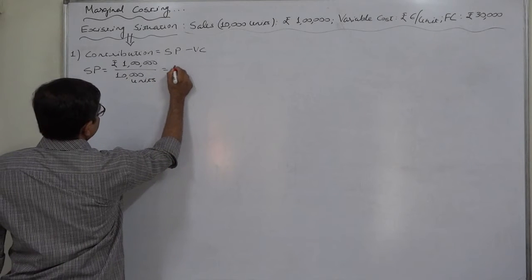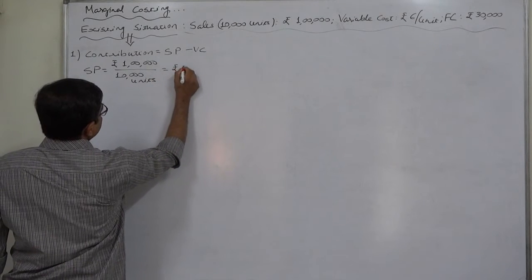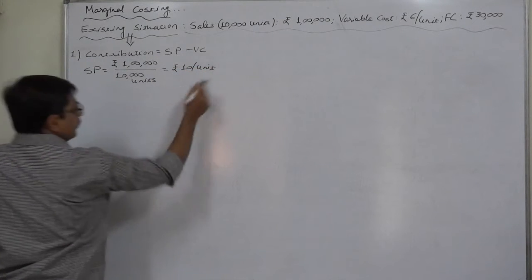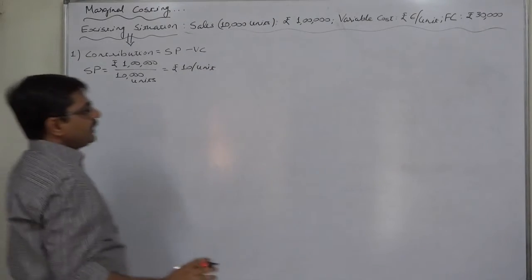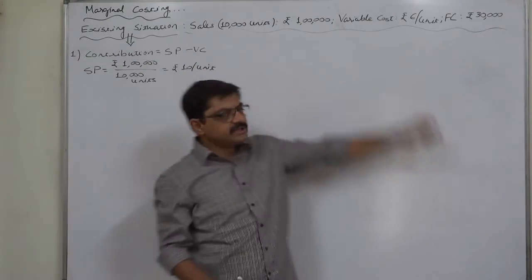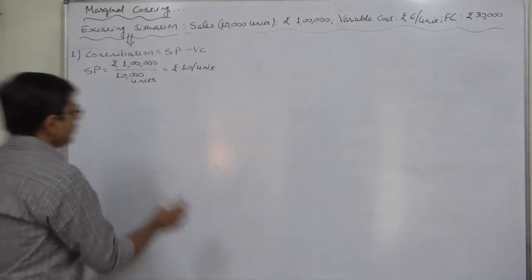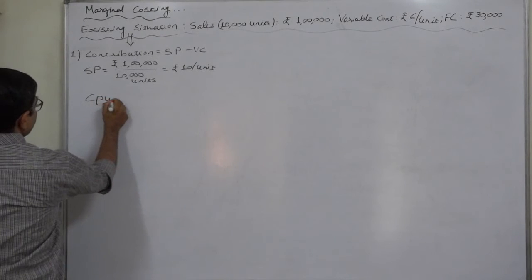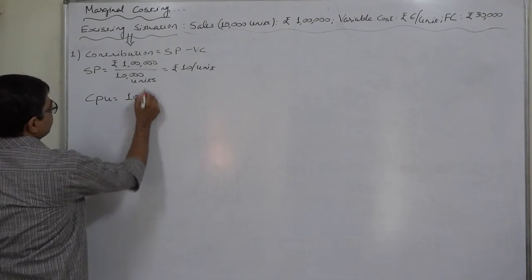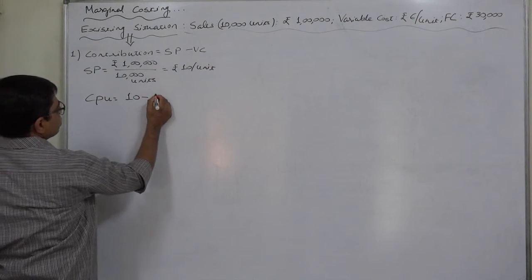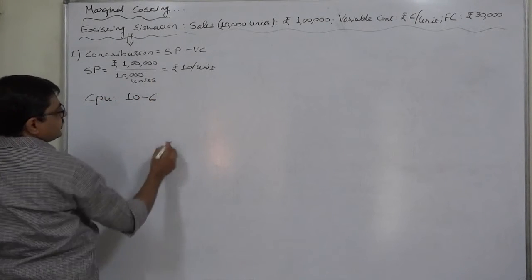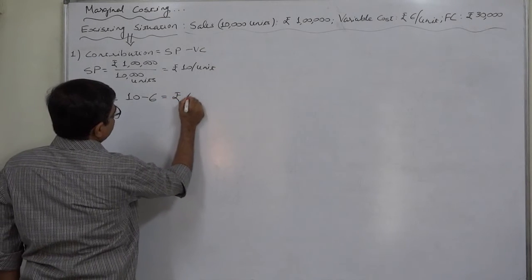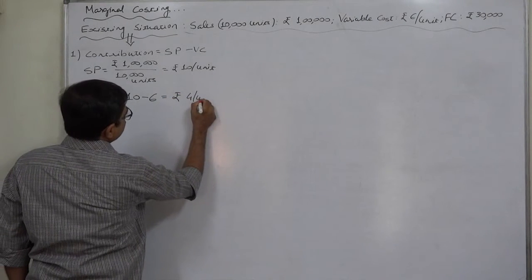The selling price comes to rupees 10 per unit. We have variable cost of rupees 6 per unit, so we can easily find out the contribution per unit: rupees 10 minus rupees 6 equals rupees 4 per unit. This is the contribution margin per unit of sales in the existing situation.